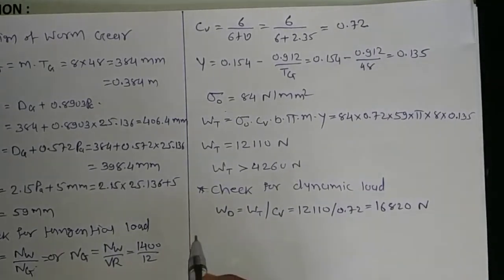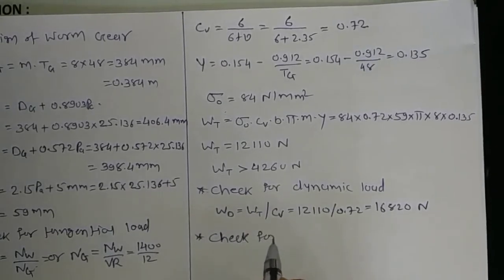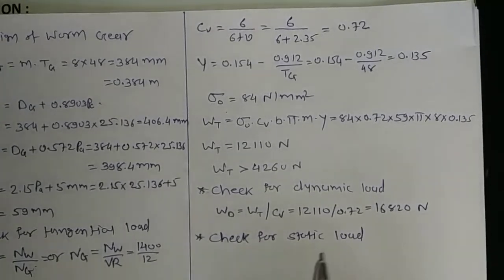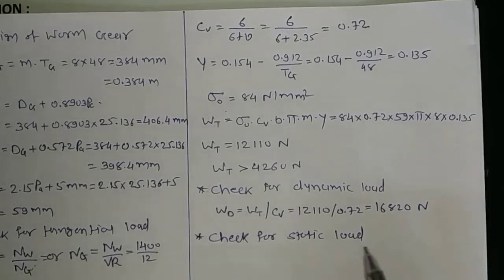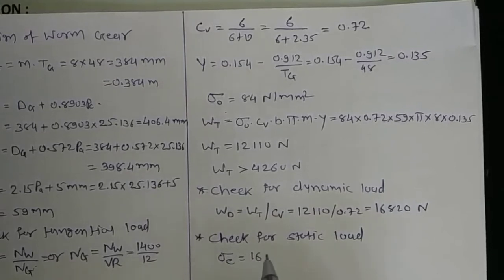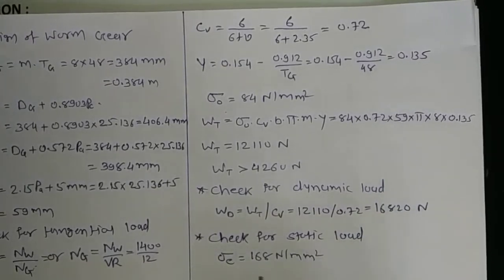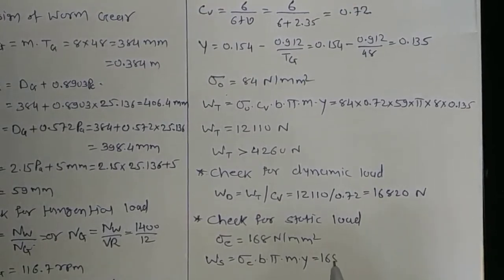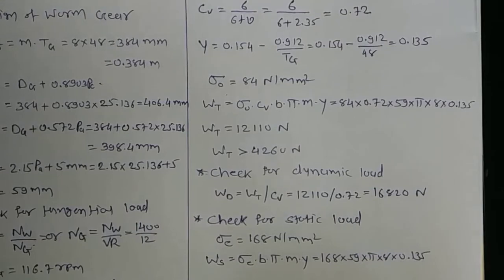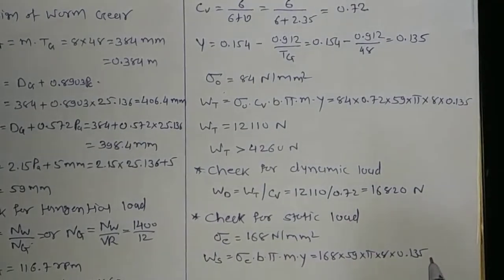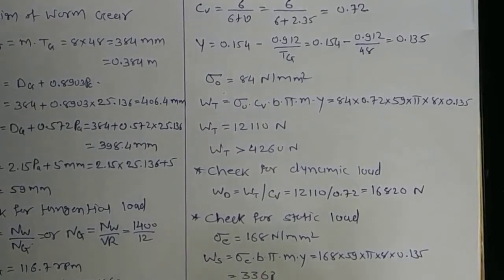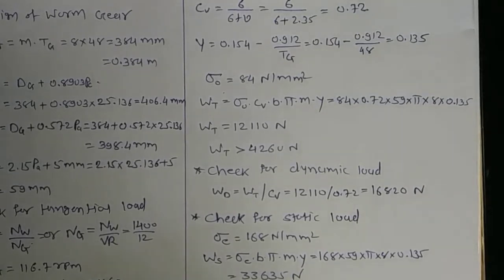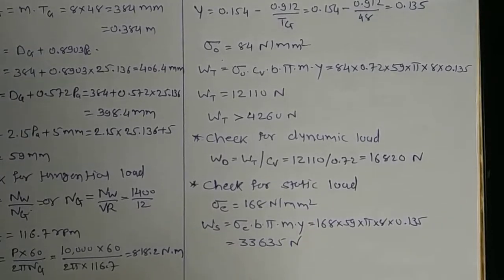Check for static load: The flexural endurance limit for phosphorus bronze σ_e = 168 N/mm². Static load W_s = σ_e × B × π × M × Y = 168 × 59 × π × 8 × 0.135 = 33,635 N. This is much greater than W_t, so the design is safe.